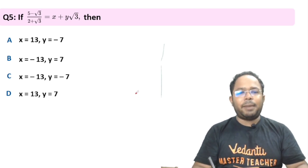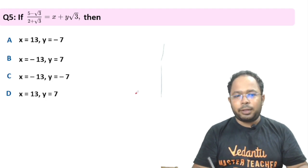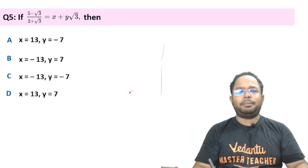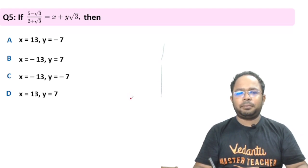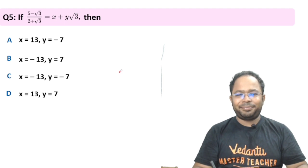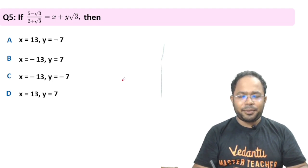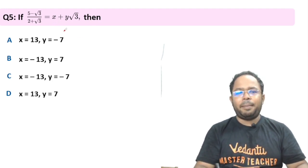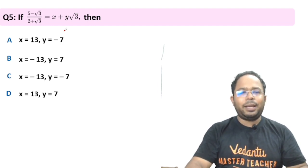If (5 − √3)/(2 + √3) equals x + y√3, then what is the value of x and y? This is a nice question. Let's solve it: (5 − √3)/(2 + √3) = x + y√3.